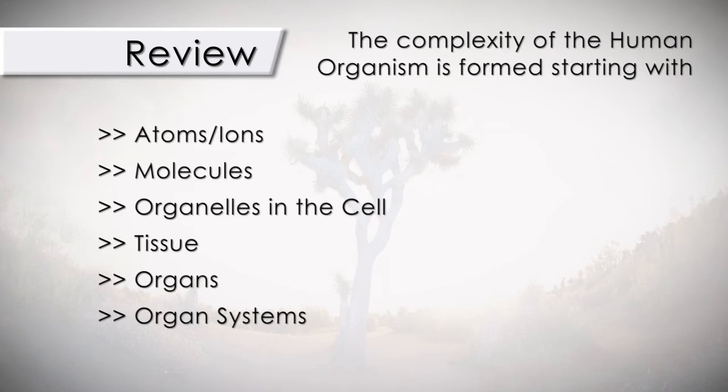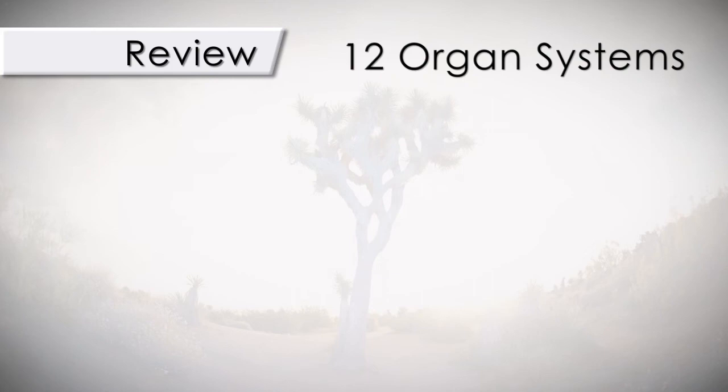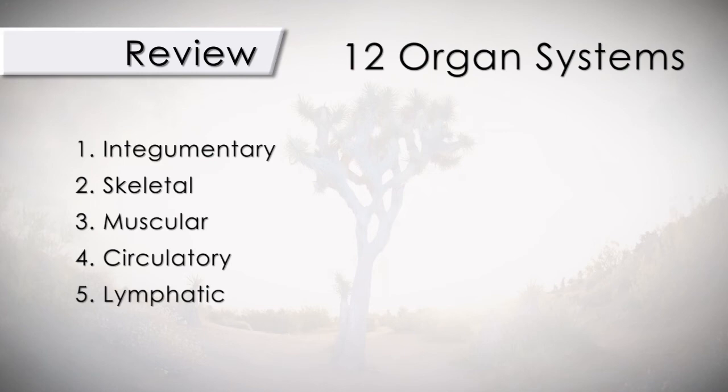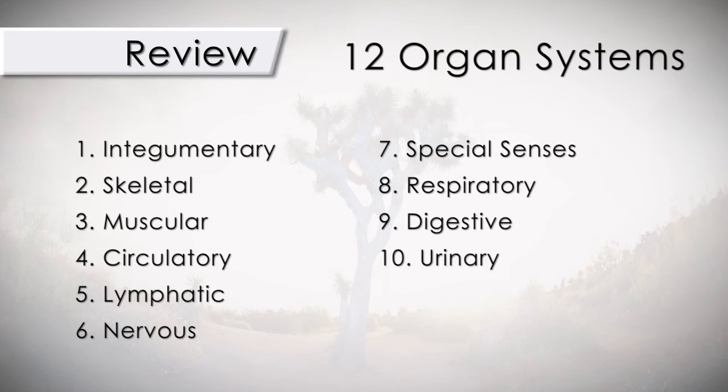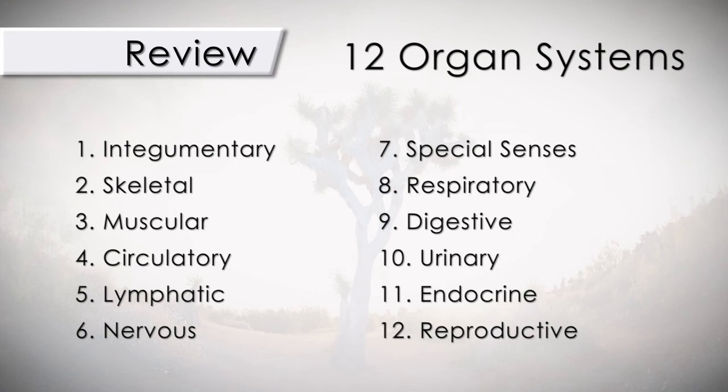The twelve organ systems are: integumentary, skeletal, muscular, circulatory, lymphatic, nervous, special senses, respiratory, digestive, urinary, endocrine, and reproductive. In the next few videos, we will be covering the anatomy, physiology, and pathophysiology of the cell.